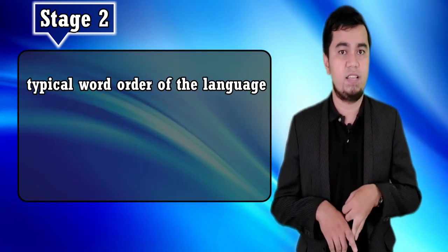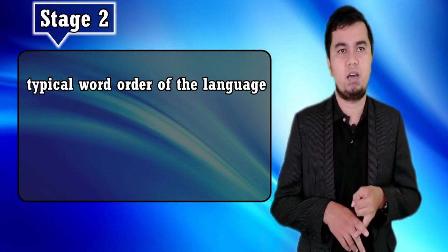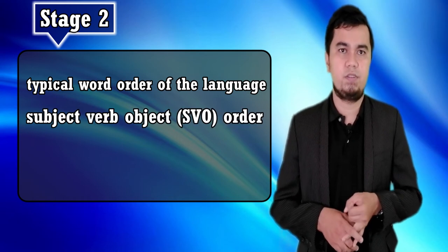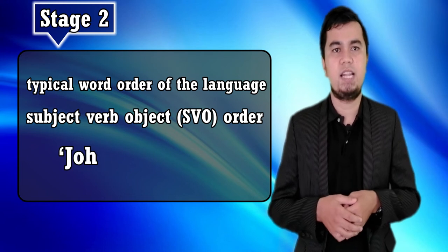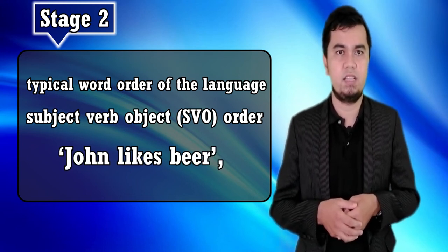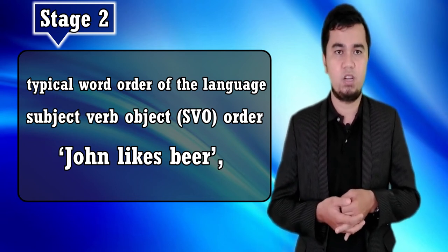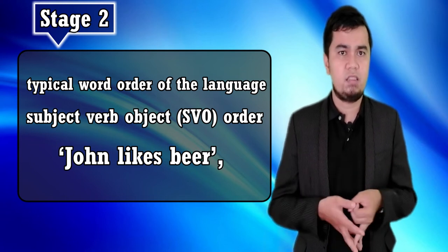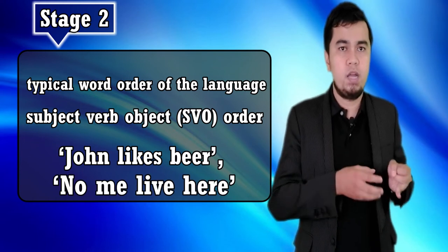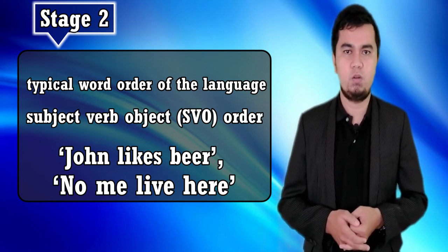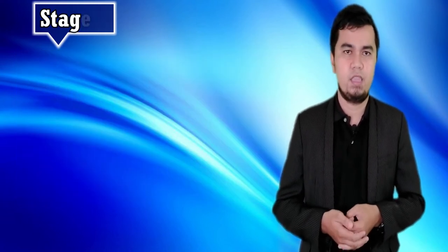The second stage is that the learner acquires typical word order of the language. For English and German the most common is the subject-verb-object order — for example, 'John likes beer.' The learners know only this one word order and do not have any alternative based on movement. So they put negatives at the front of the sentence — for example, 'No me live here' — and make questions with rising intonation, such as 'You like me?' — both of which maintain the basic word order of English without needing movement.